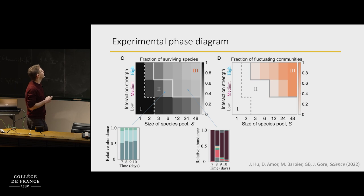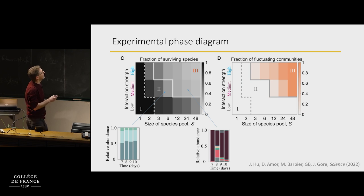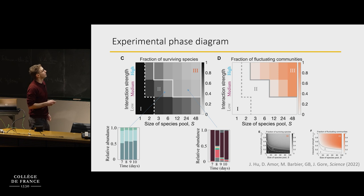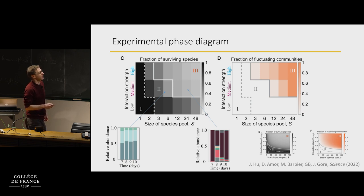You can overlay the information about whether or not you saw fluctuations in the last four days. Here I'm showing an example of six species — there are maybe three or four species that managed to coexist at days seven to ten. And here is an example where there are more species that survive, but they also fluctuate dramatically over long times. These are the experimental results, and these are the simulations I showed you before.